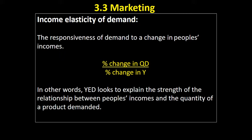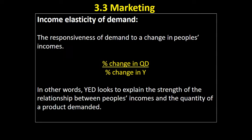So what is income elasticity of demand? In price elasticity of demand we were asking: if price changes, how is that going to affect the quantity demanded? This time we're looking at if people's incomes change, how will that affect the quantity demanded of a product? In the formula, Y represents income, and it's calculated by the percentage change in quantity demanded divided by the percentage change in income. By calculating income elasticity of demand — often shortened to YED — we are looking to explain the strength of the relationship between people's incomes and the quantity of a product demanded.